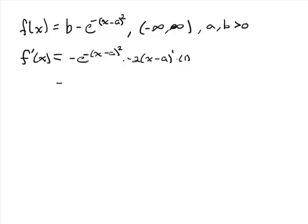Let's clean it up just a little bit. We have a negative and a negative, that'll be a positive. So we'll pull the 2(x-a) out front, e^(-(x-a)²).